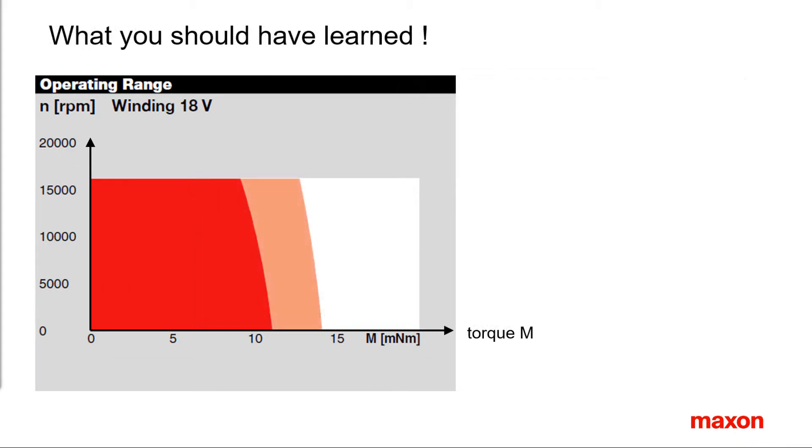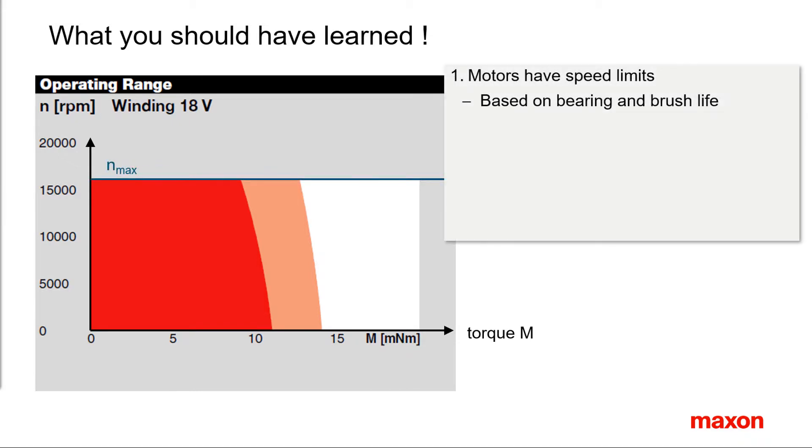The key messages to keep from chapter 1: Motors have speed limits. They stem from consideration about bearing and brush life. Motor torque and current are equivalent, with the torque constant Km as proportionality constant.